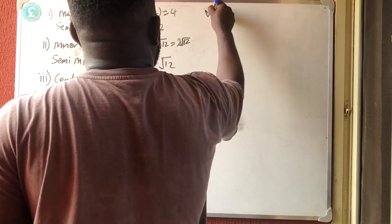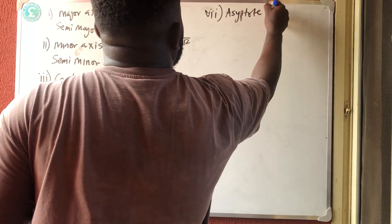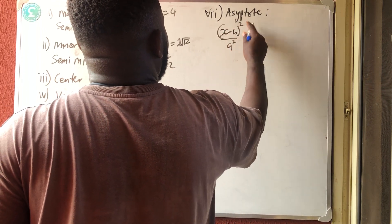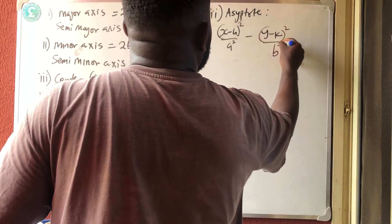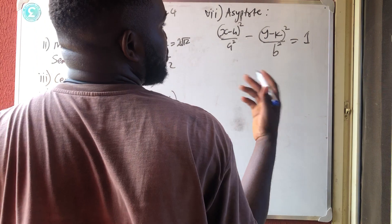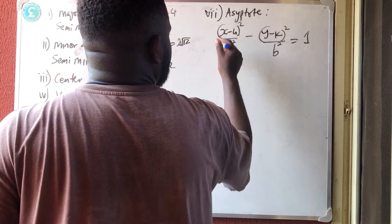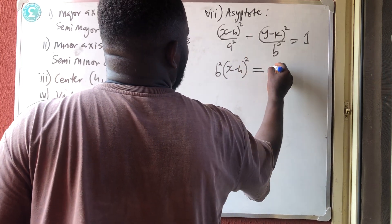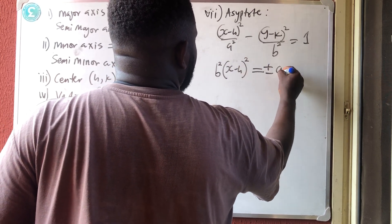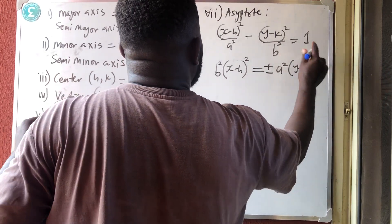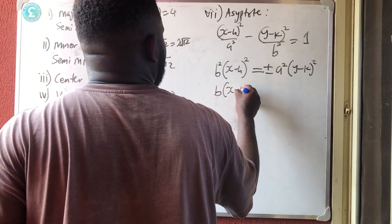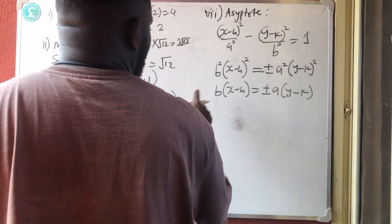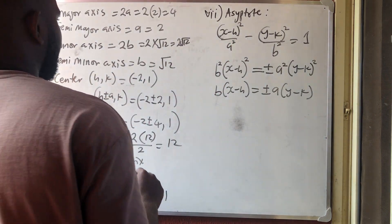For asymptotes: take the standard equation (x − h)²/a² − (y − k)²/b² = 1 and cross-multiply, then set equal to zero. This gives b(x − h) = ±a(y − k). Substituting our values: √12 · (x + 2) = ±2(y − 1).